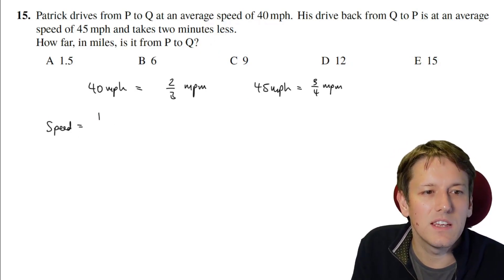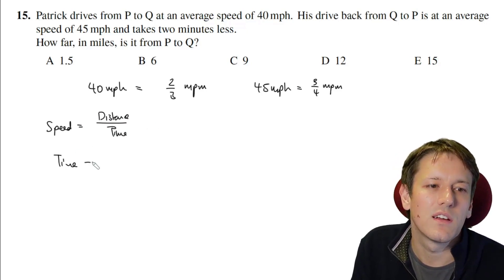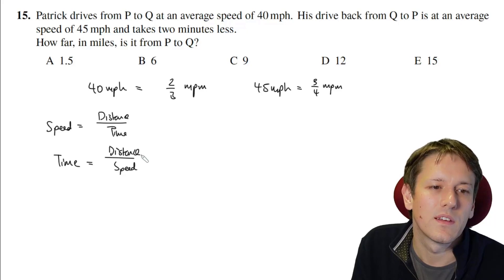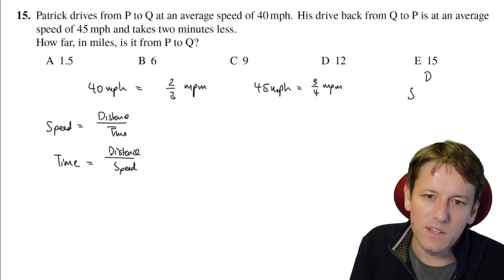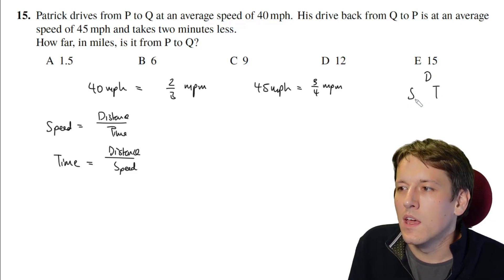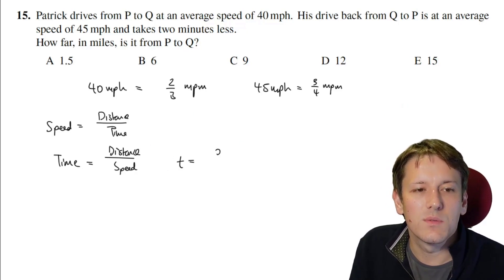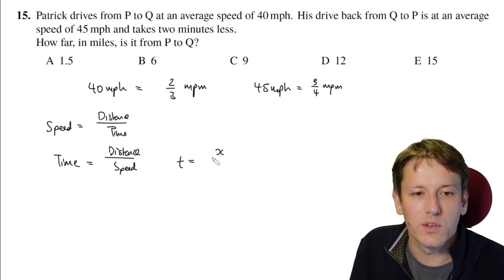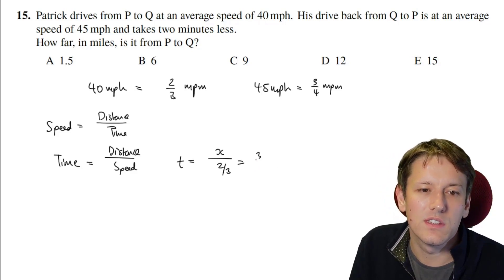So we've got speed equals distance over time. And as we're going to be thinking about the time here, let's rearrange this to give time equals distance over speed. And you can use the, some people like to write this as a triangle, speed equals distance over time, like this or something. So I'm crossing out the time here and saying that's distance over speed. Anyway, however you remember, that's fine. And so on the way out, the time t is going to be the distance, which we'll just call x, which is the same on the way out as it is on the way back of course, divided by the speed, which we have got as two thirds. So dividing by a fraction, you turn the fraction upside down and multiply. So this is three over two x.